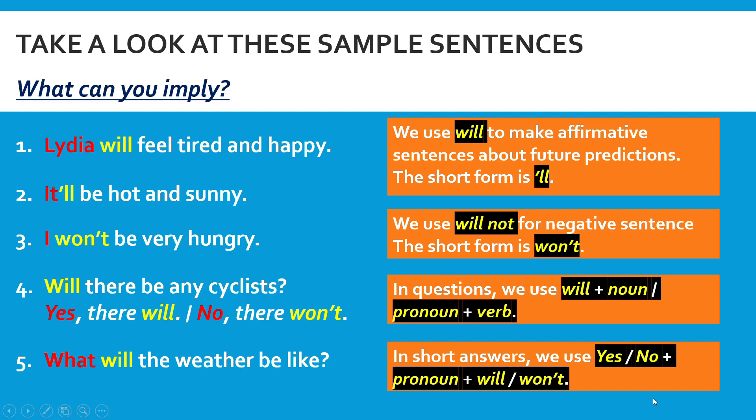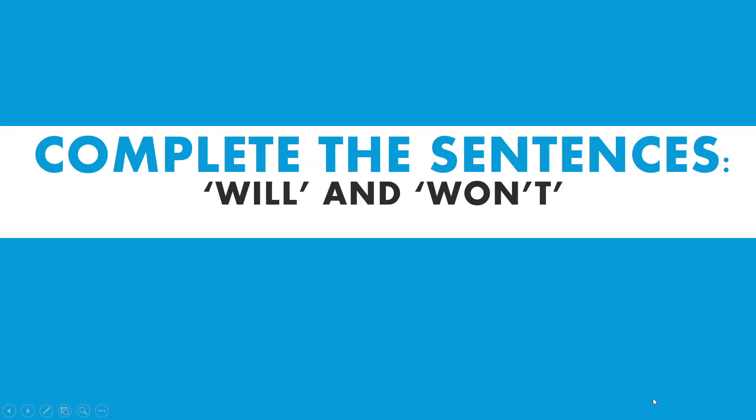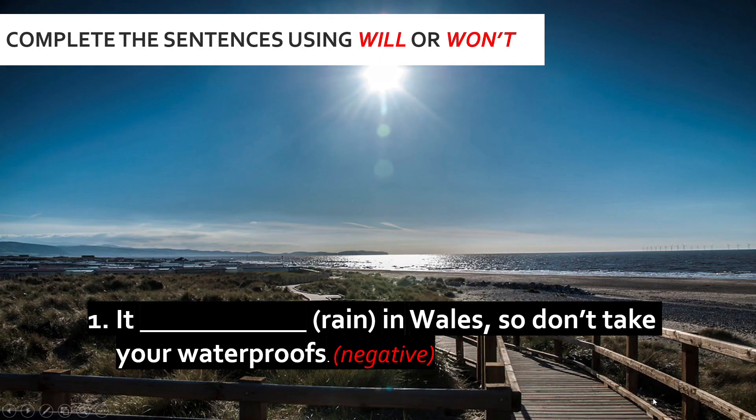It's okay if you are still a little bit confused at this stage, because after this we are going to do more sample questions in the following activities. Now let's move on to the second activity of our lesson today, which is to complete the sentences using 'will' and 'won't'. Let's start off with a very simple activity first. Each sentence given here is written as affirmative or negative at the end.